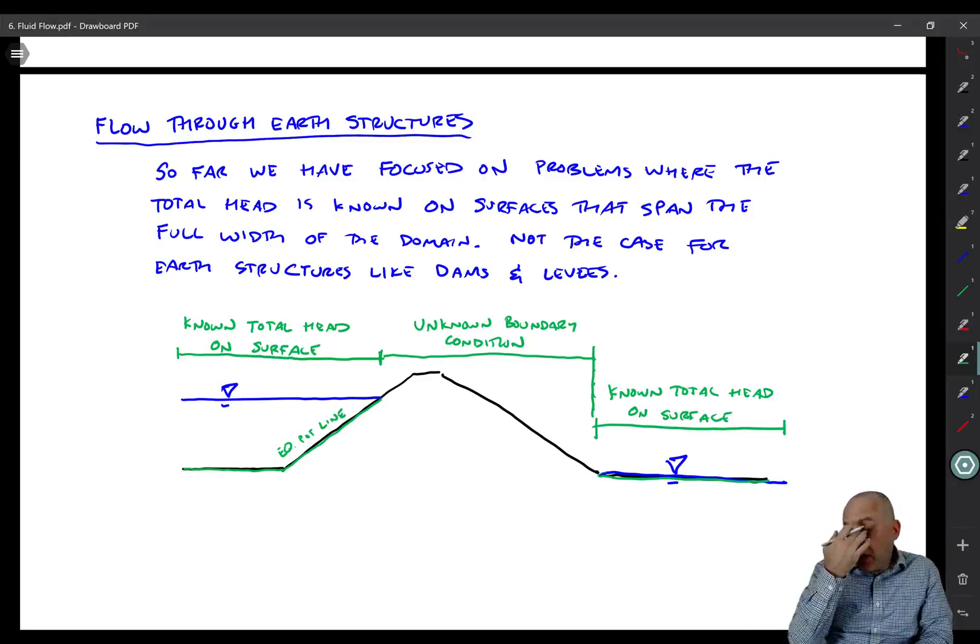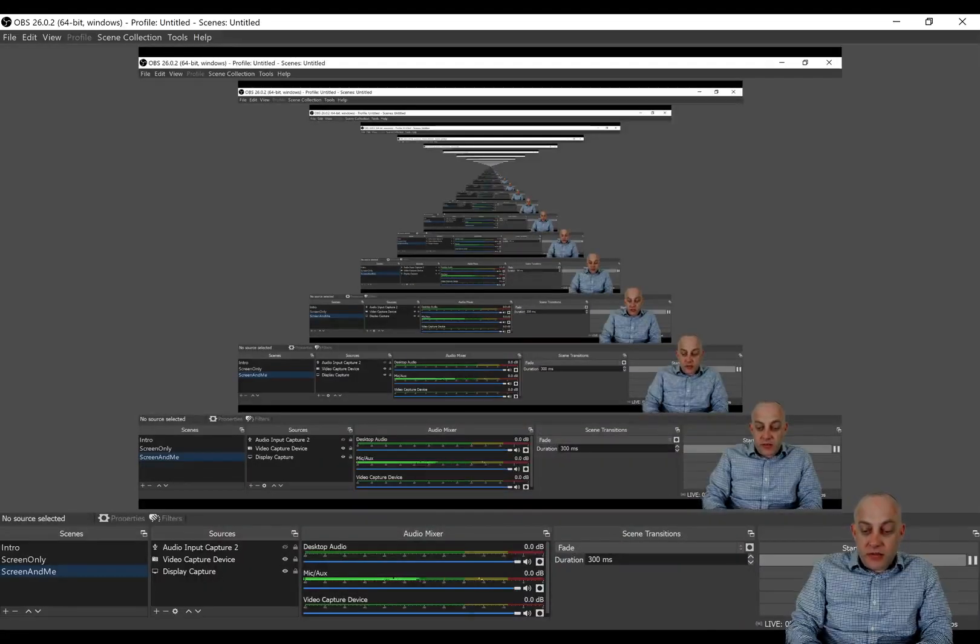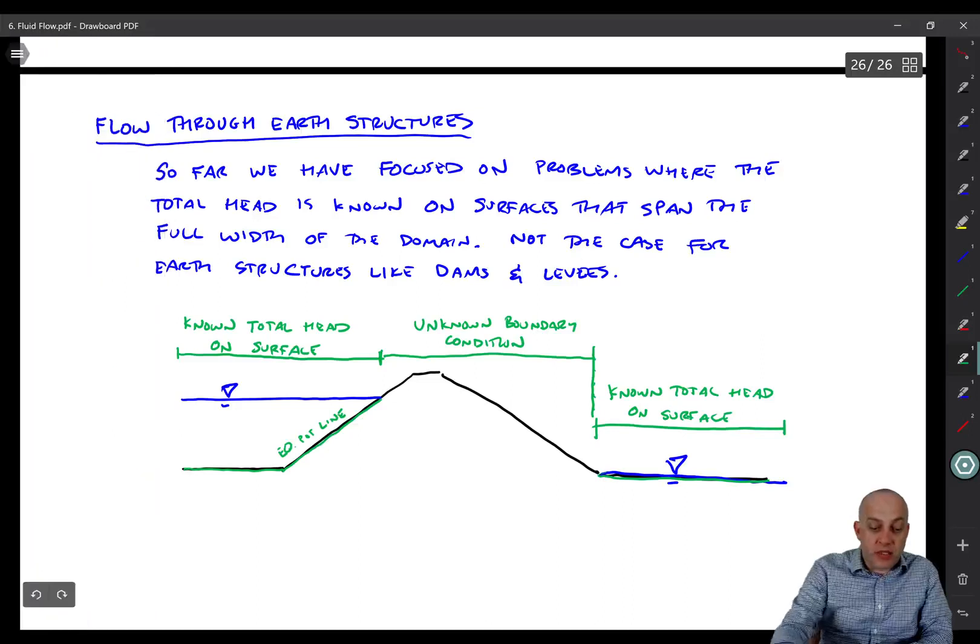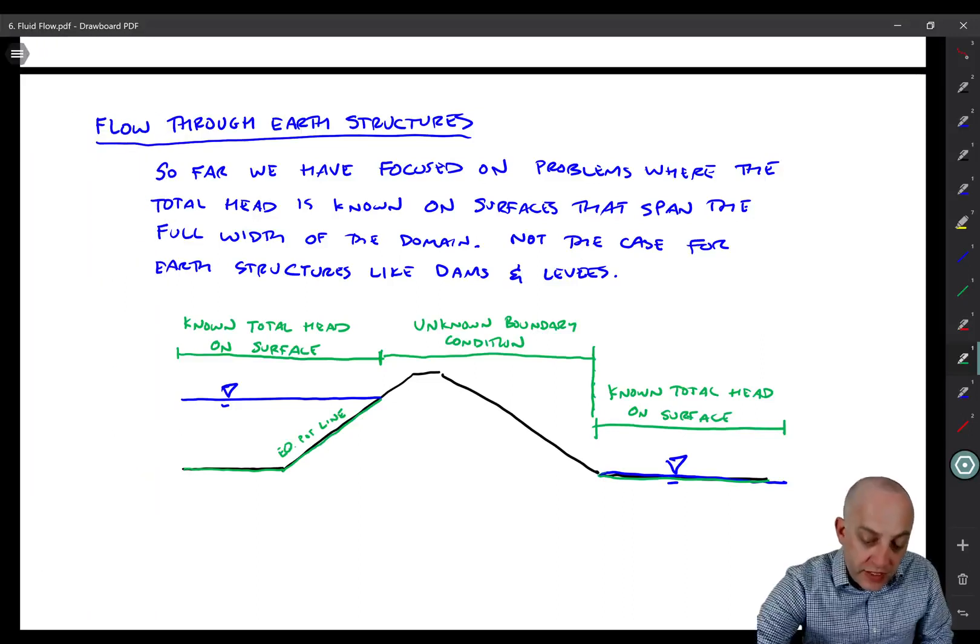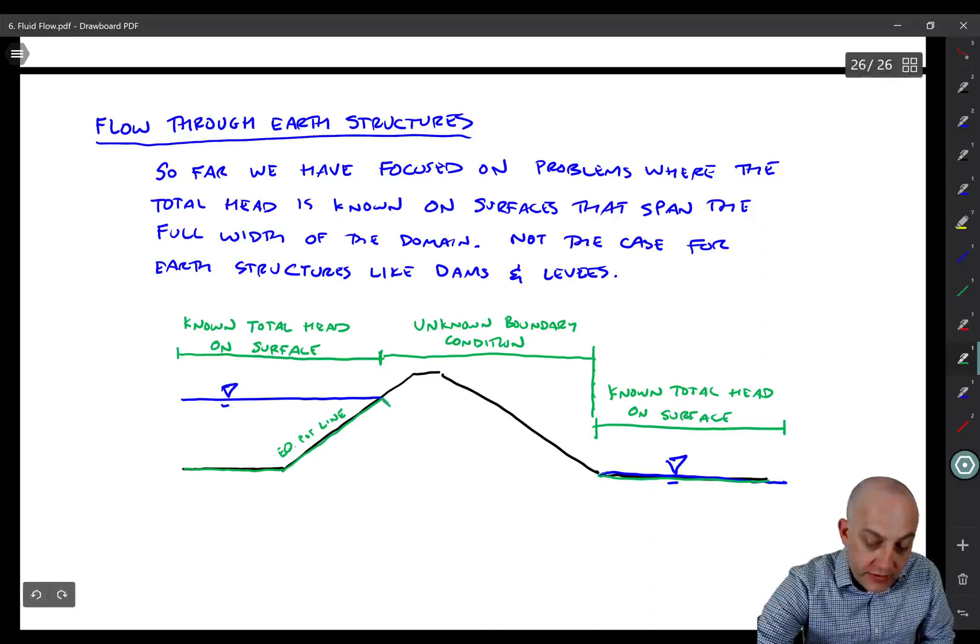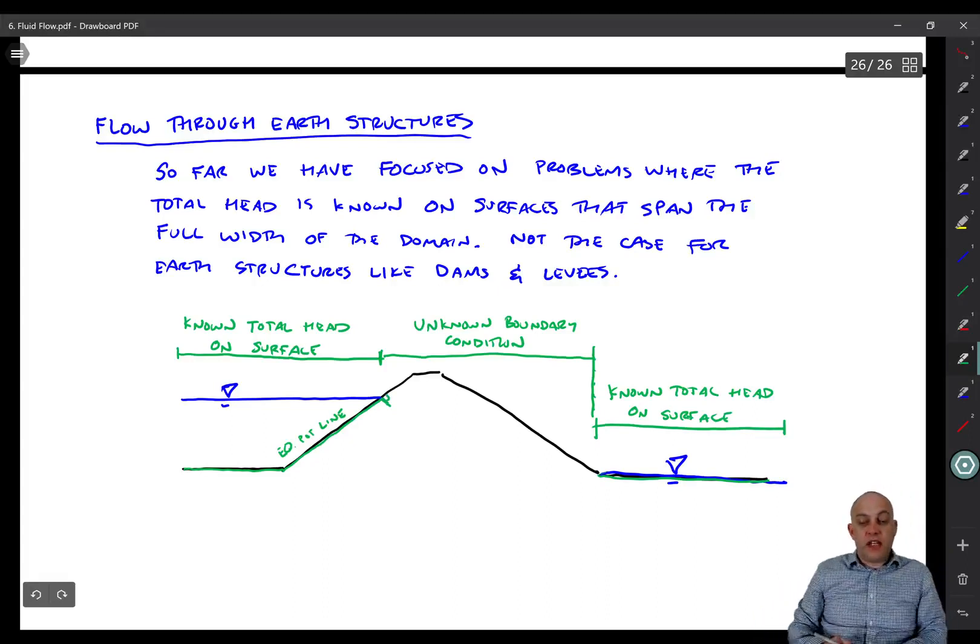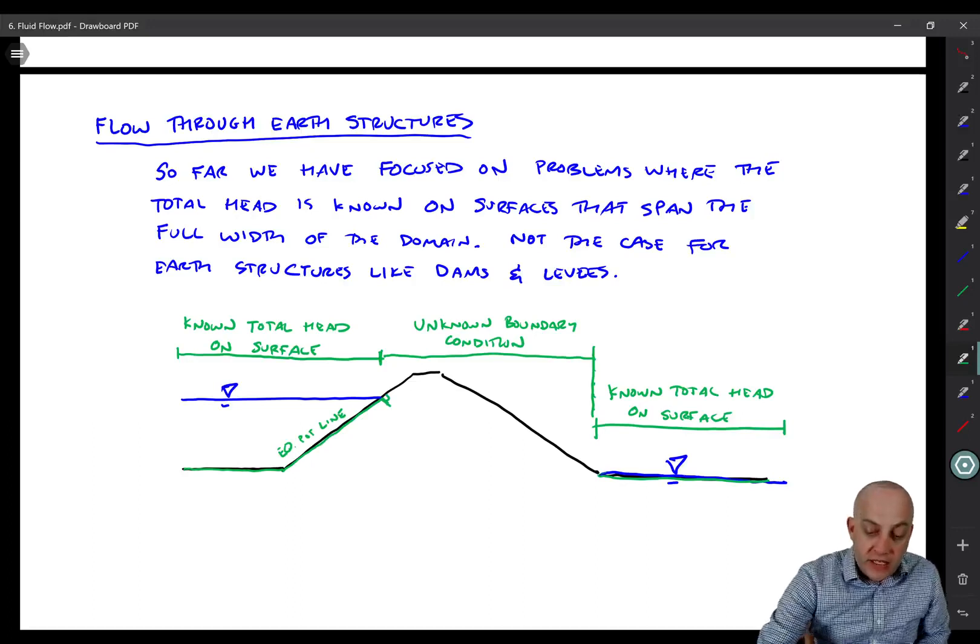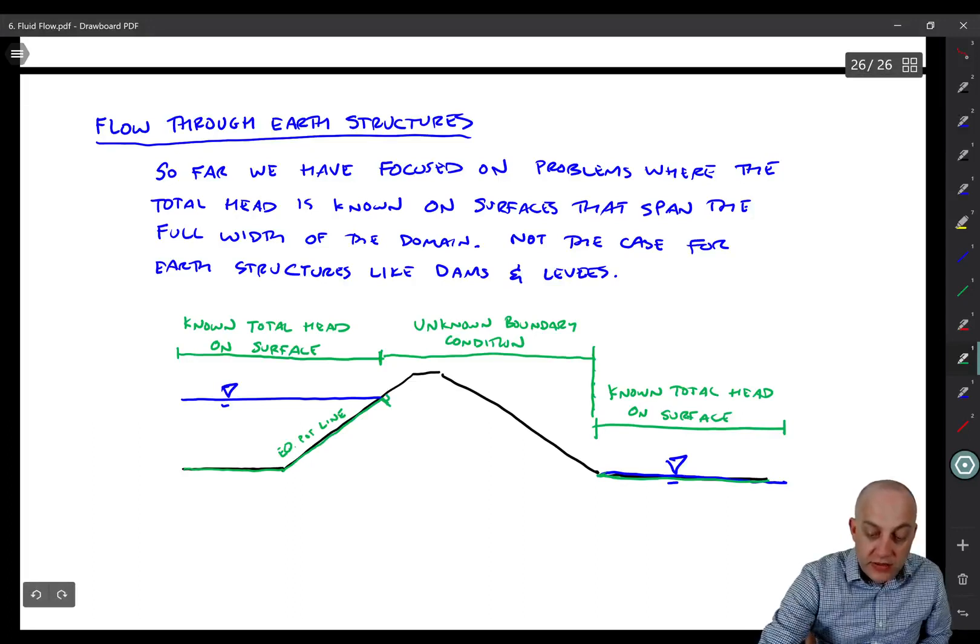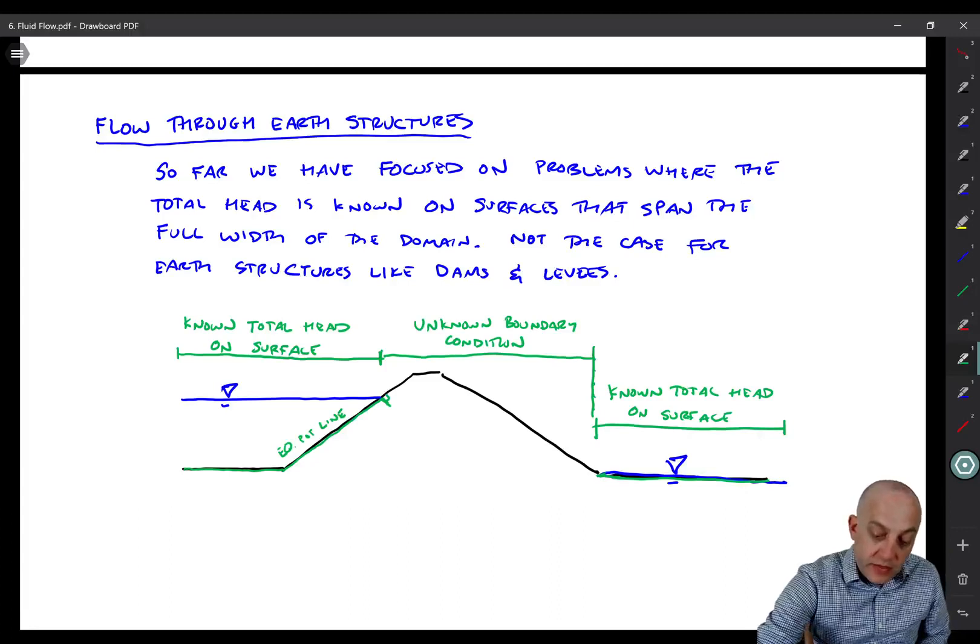So what I'm going to do now is try and draw the top flow line. And that top flow line is going to bound the water surface. Now what we know about flow lines and equipotential lines is that they have to be perpendicular to each other. So I know that the flow line is going to have to start out at an angle like that. That's a right angle. And then it's got to catch up somehow with this point down there. So what I'm going to do is kind of sketch it.